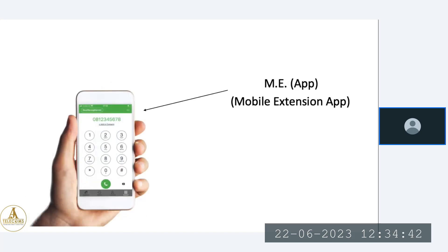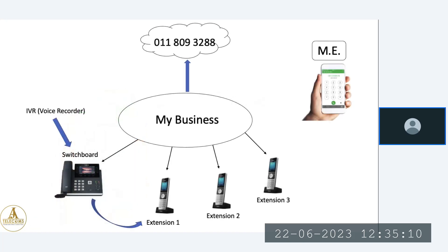Then we've got what you can call a mobile extension — it's our app. The client can have an app on their own cell phone and calls can be directed straight to their cell phone from the office. This means they don't need to be in the office to receive business calls. Wherever they are around the country, as long as they've got a stable internet connection, they can still receive those important business calls.